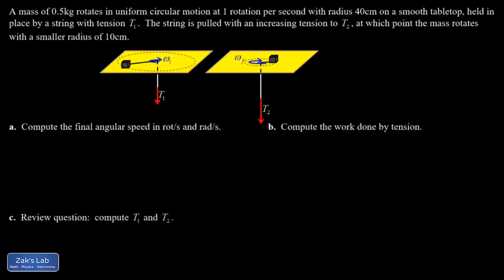In this problem, we observe a rotating mass in the initial state, and it has to be held in place with a tension in order to supply this centripetal force, and that's called T1. And then we're going to pull on that string harder and harder, and it's going to shrink the radius for the uniform circular motion for this object. And it's going to take a bigger force to hold it in place, and that's called T2.